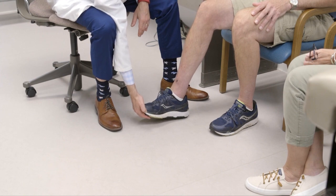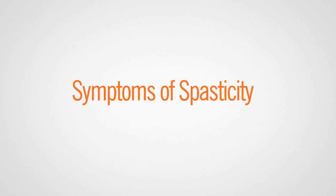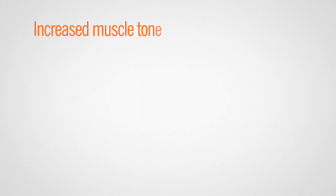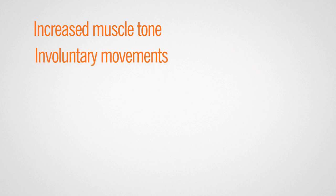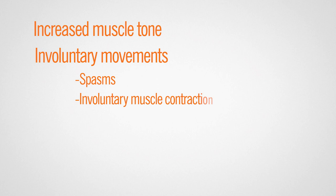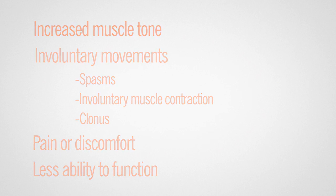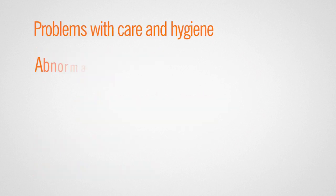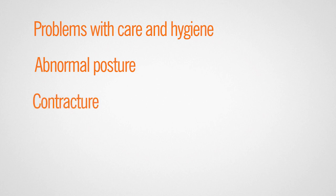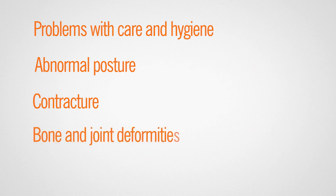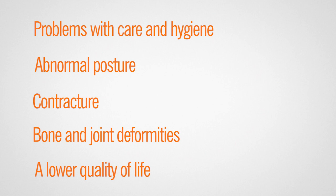Spasticity often affects the legs, but can also occur in the arms and in the neck and trunk. The symptoms of spasticity include increased muscle tone, involuntary movements such as spasms and involuntary muscle contraction, and clonus — a series of fast involuntary contractions that feel like a tremor — pain or discomfort, less ability to function, problems with care and hygiene, abnormal posture, contracture (a permanent tightening of the muscle and tendon caused by severe stiffness and spasms), bone and joint deformities, and a lower quality of life.